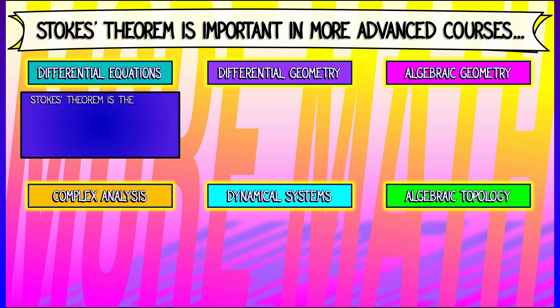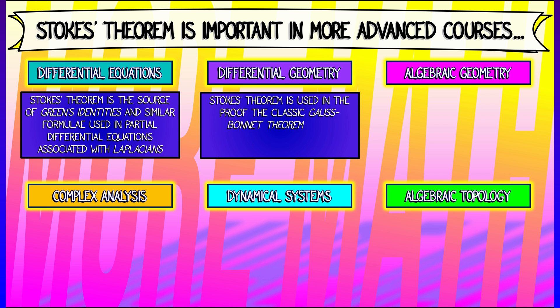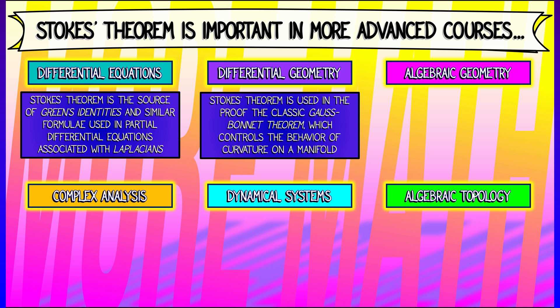For example, if you take a course in differential equations, you're going to see Stokes' theorem in the form of Green's identities and other formulae that are used in equations associated with Laplacians. In differential geometry, you're going to learn a really important theorem called the Gauss-Bonnet theorem that controls curvature on a surface or a manifold — look for Stokes' theorem in the proof of that.